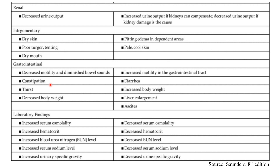In the gastrointestinal system with fluid volume deficit: decreased motility, diminished bowel sounds, constipation, thirst, and decreased body weight. Fluid volume excess shows liver enlargement and ascites. For laboratory findings: fluid volume deficit — all values decrease except heart rate and respiratory findings; laboratory findings increase. Fluid volume excess — all values increase except laboratory findings, which decrease. Remember these key points for the exam.